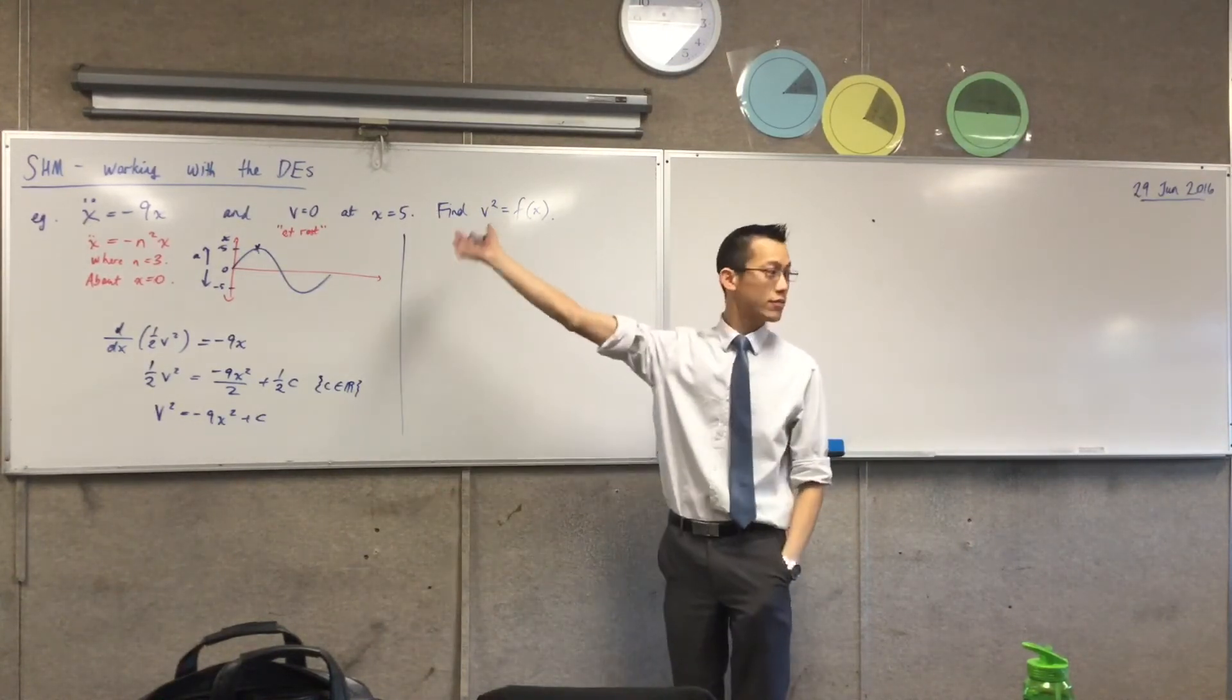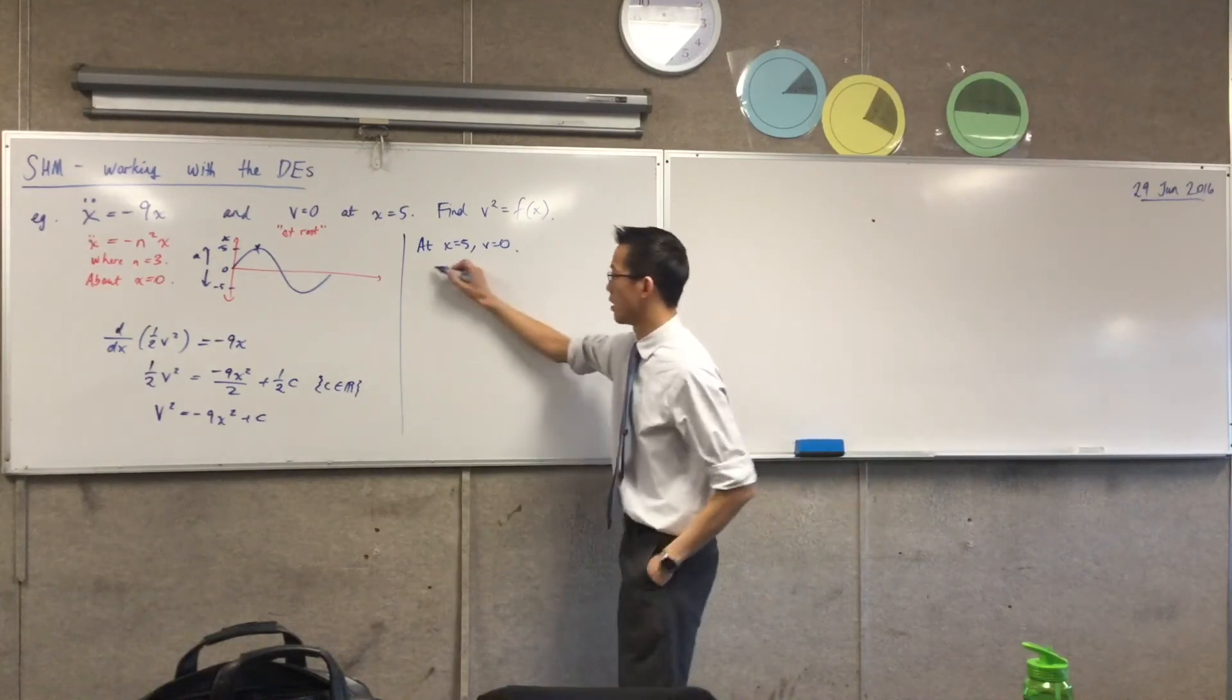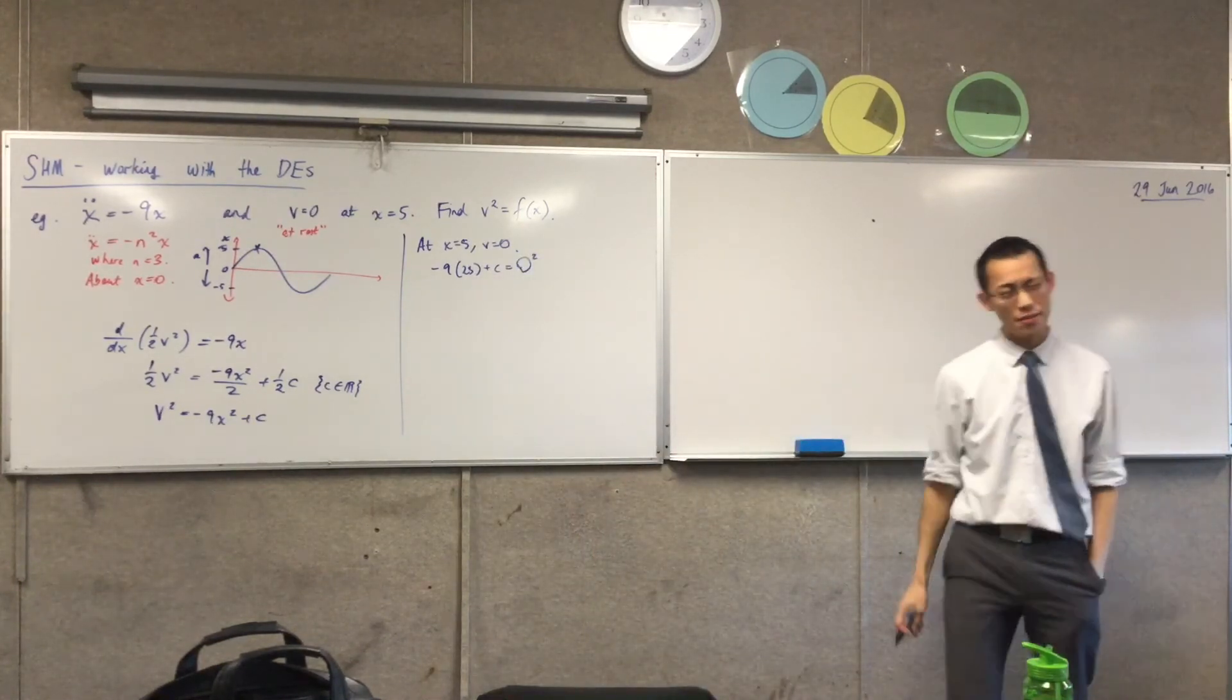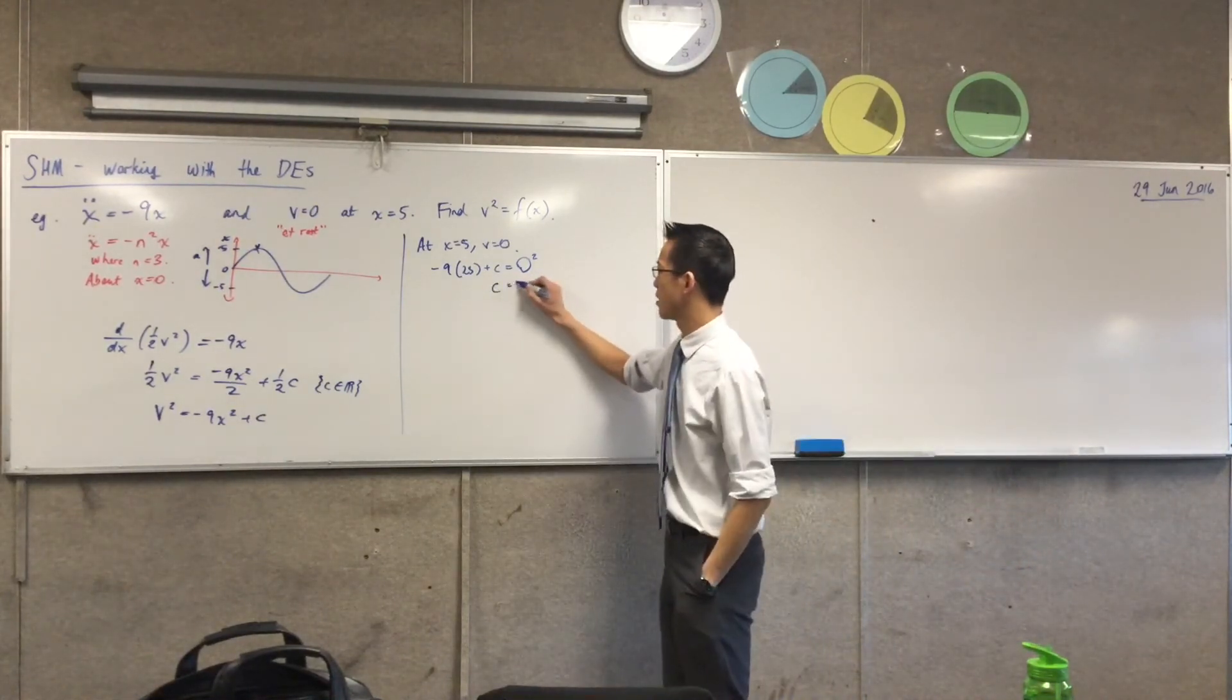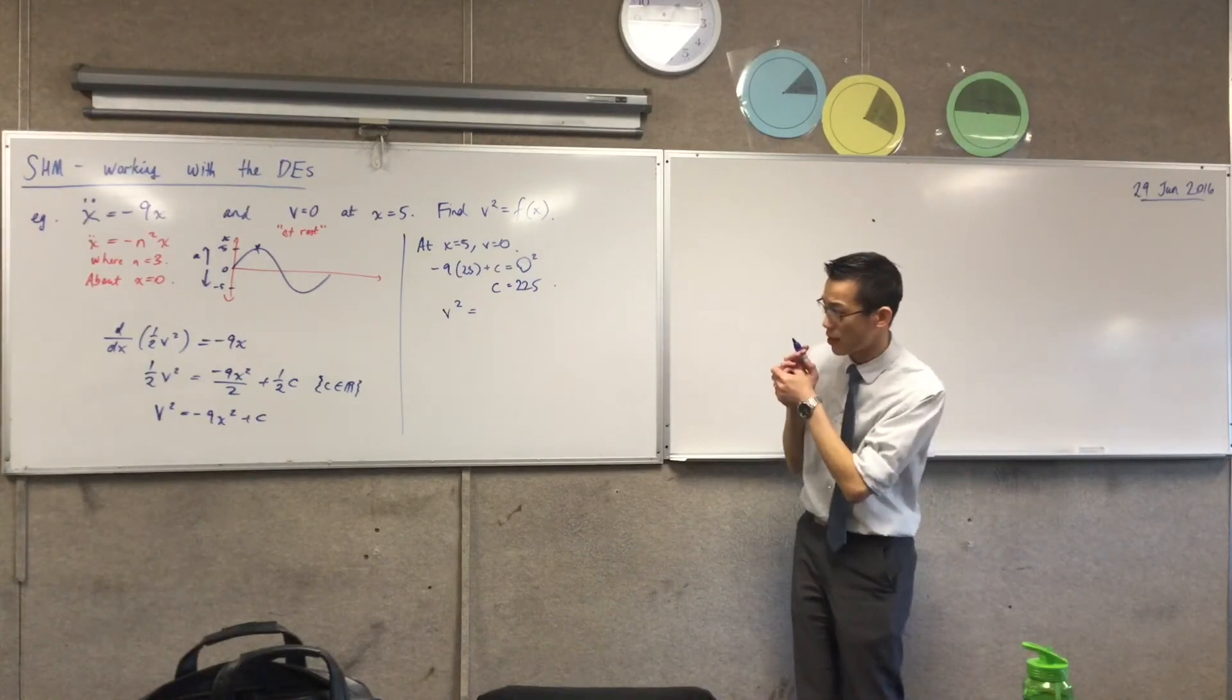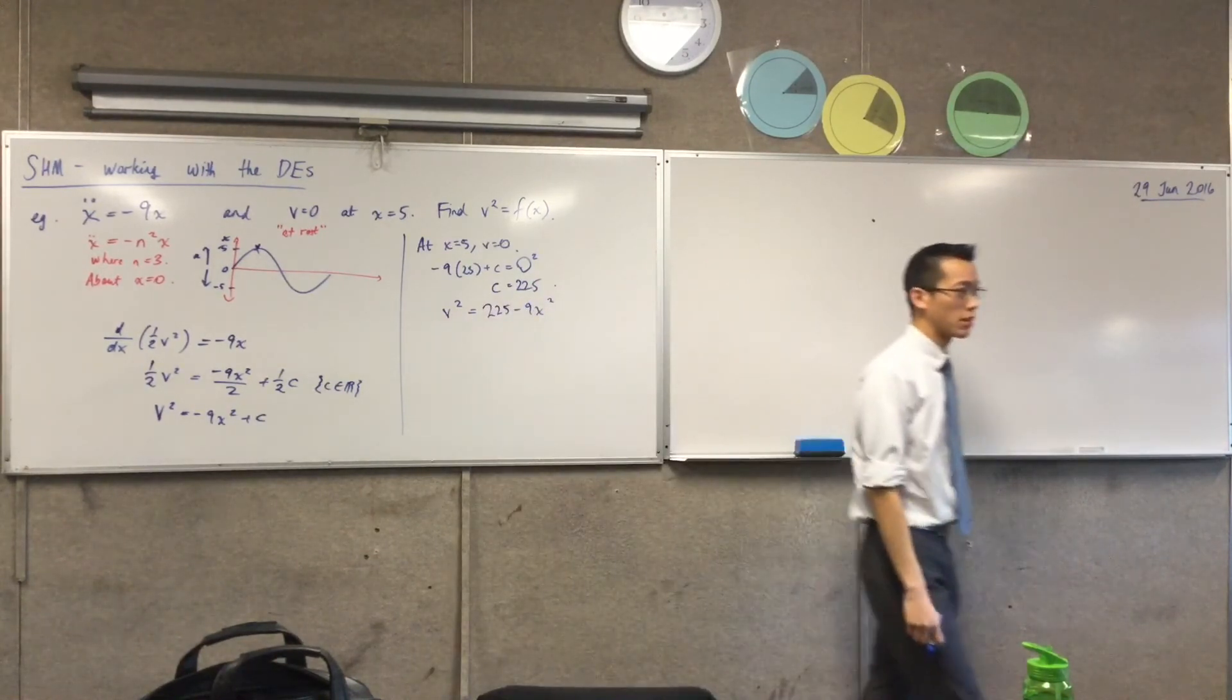When x equals 5, v equals 0. I'll have to say at. So I'm just going to substitute here. What are we going to get here? Negative 9 times 25 is 0 squared. 9 times 25, that's 1 short of 10 times 25, so it's 250. We're going to take one away, so that's going to be 225. And I can sub that back in. So I've got this. I notice c is positive. And I've got a minus 9x squared there. So I'm going to write c out the front. 225 minus 9x squared. What do you think? Is it going okay?